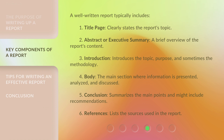A well-written report typically includes: 1. Title page — clearly states the report's topic. 2. Abstract or executive summary — a brief overview of the report's content. 3. Introduction — introduces the topic, purpose, and sometimes the methodology. 4. Body — the main section where information is presented, analyzed, and discussed. 5. Conclusion — summarizes the main points and might include recommendations. 6. References — lists the sources used in the report.